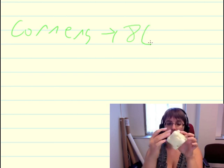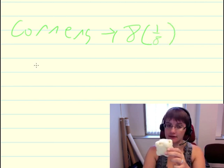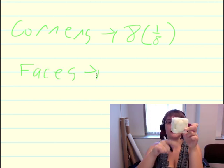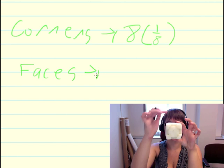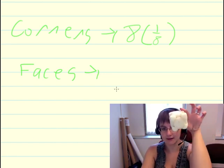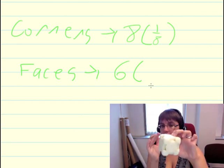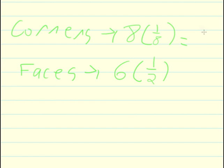On each of those eight corners, we have one-eighth of an atom. Now let's look at the faces. Counting the faces: one face on top, one on bottom, one in the front, one in the back, one on each side — a total of six faces. On each of those faces, we have one-half of a full atom. Doing the math, there is one atom from the corners and three atoms from the faces, meaning we have four atoms total in the unit cell.